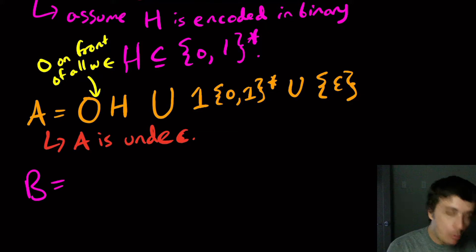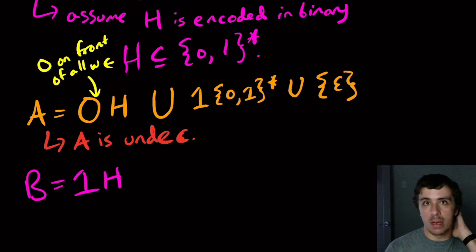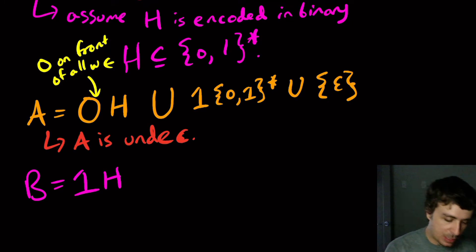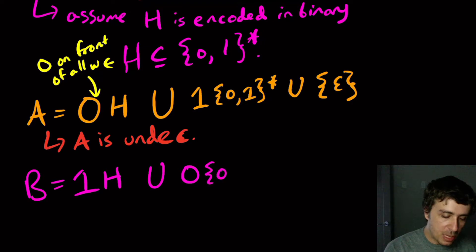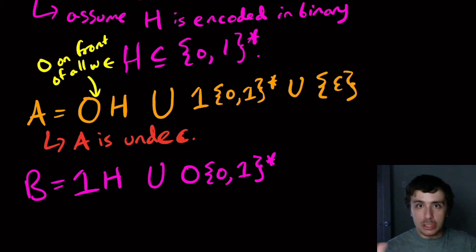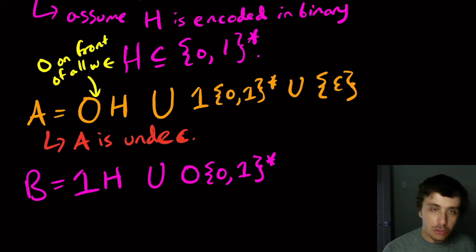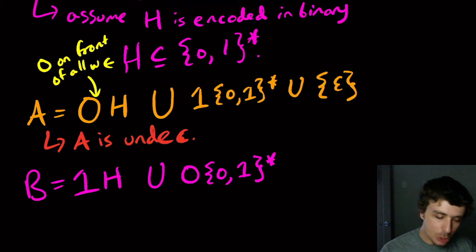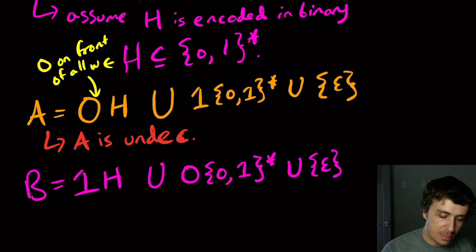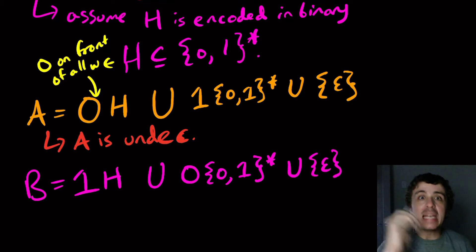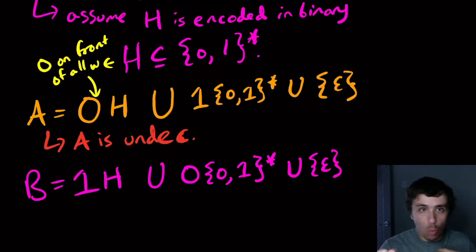Now I'm going to form set B, which is very similar. Here I'm going to put a one on the front of every string in H — still undecidable. Then similarly, every string that starts with a zero goes into B, and any string starting with one corresponds to a string in the halting set H. Again, I include the empty string. So B is also undecidable for similar reasons: if the string starts with one, take the one off, and that's equivalent to solving the halting problem.